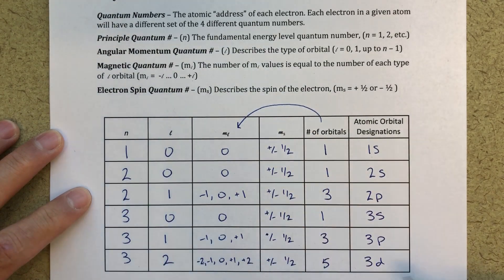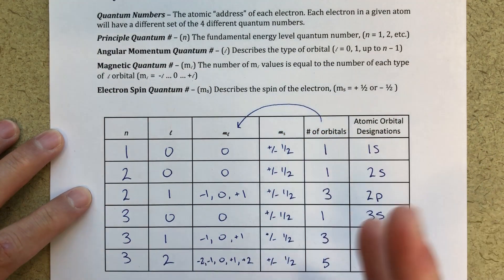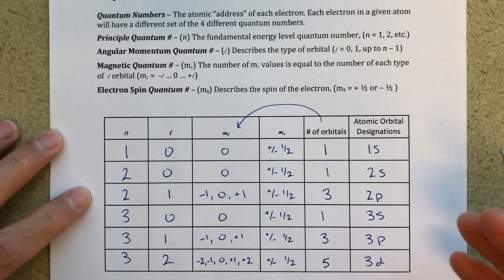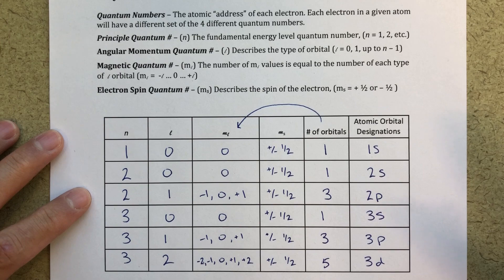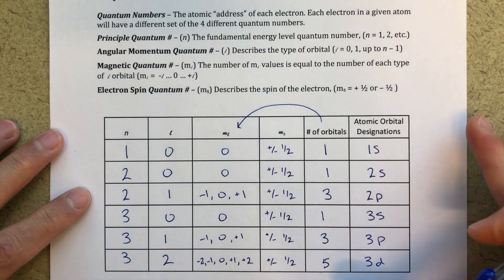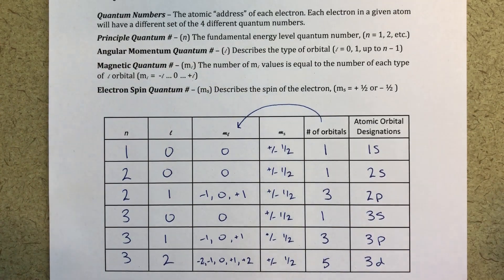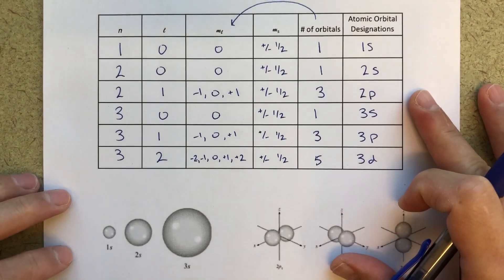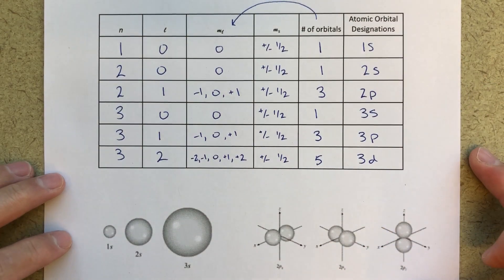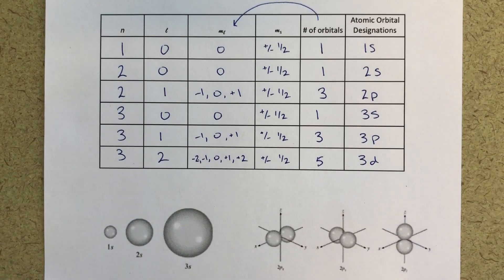That's how we complete this table. Once we have it, we can do lots of other things — there's a video I'll link to that talks about how we relate this to electron configurations and other topics. But this is the basics to get us started, and we'll look at the pictures one more time. Hopefully that's helpful.